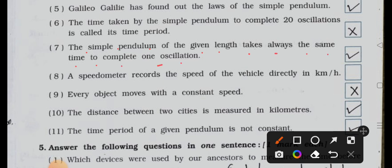Now see number seven: the simple pendulum of the given length takes always the same time to complete one oscillation. It's right. Now see the ninth one: every object moves with a constant speed. It's wrong.